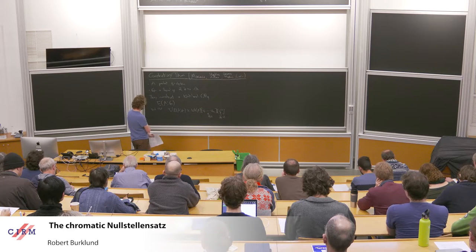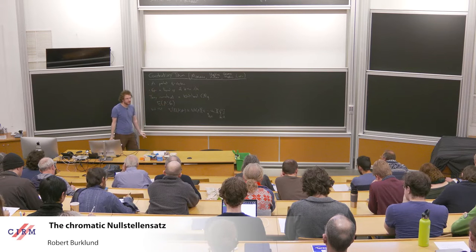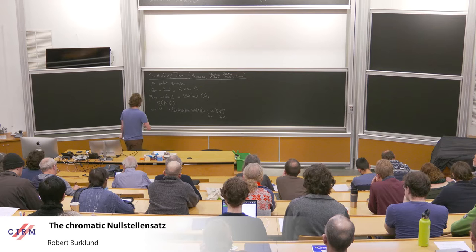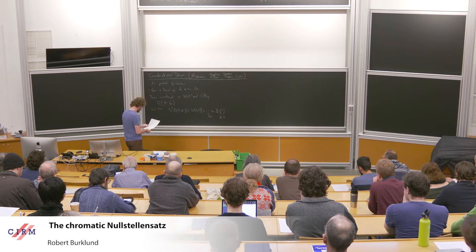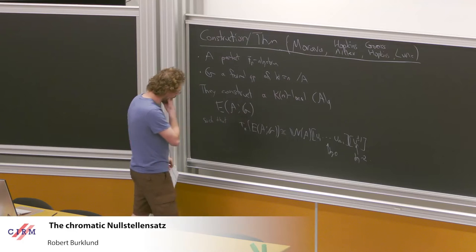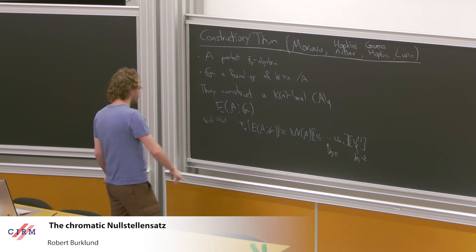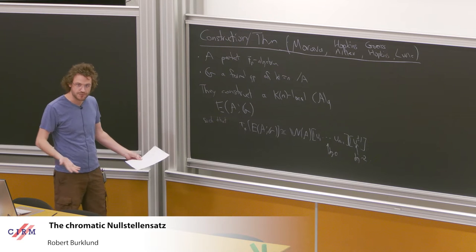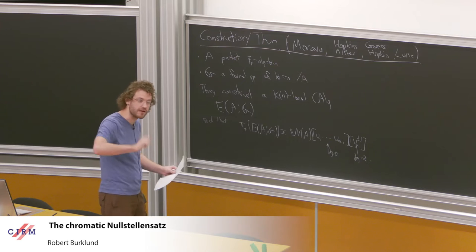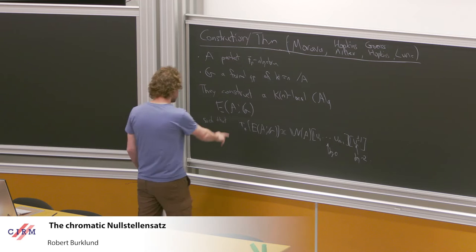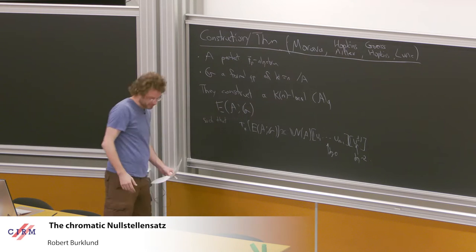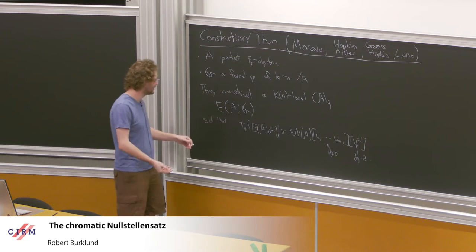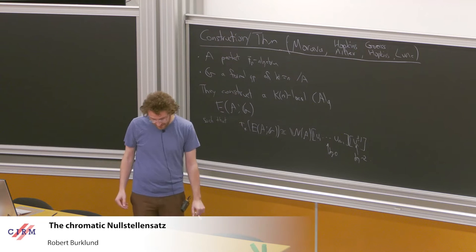When A is Noetherian, pi_0 of E(A,G) is going to be the Lubin-Tate deformation space of G - it'll be the universal deformation. Also, if A is a separably closed field, then all formal groups of height N are going to be isomorphic, and in particular we can drop G from notation because up to choice there's only one. So I've said a bit about chromatic homotopy and set up the players - E-theories - that will appear throughout this talk. Now it's time to say a bit about Null-Stellensätze.